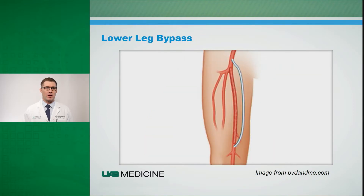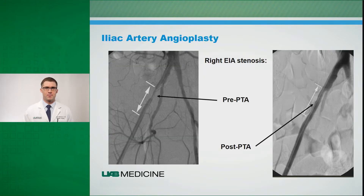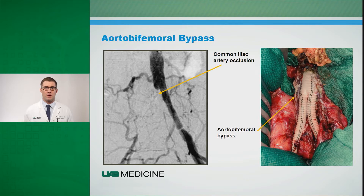Lower leg bypass, preferably using a segment of your vein, or sometimes prosthetic bypass, can be used to improve blood flow around a blockage within your leg or arm. Endovascular measures in the bigger vessels with iliac or aortic treatments with angioplasty or stenting can be used, or bypass can also be applied, such as an aorto-femoral bypass from the aorta down to the arteries in the groin to bypass an occluded vessel.